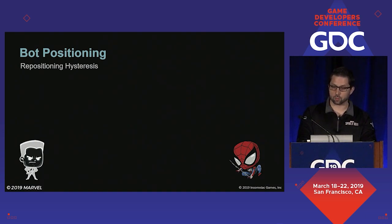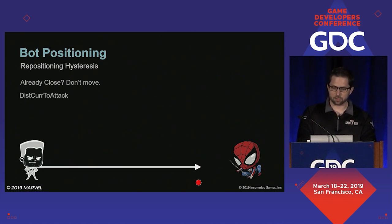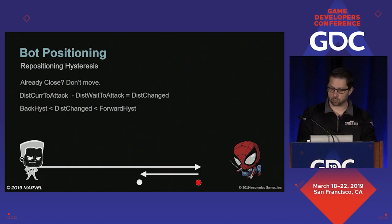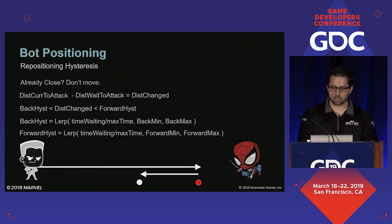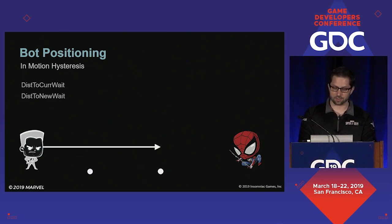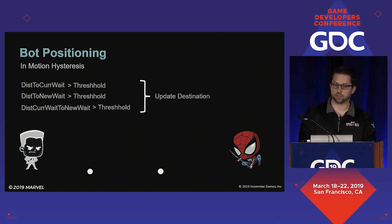In frantic combat, we still had issues with enemies repositioning when it felt unnatural. So we added a final check at the behavior level. First, we'd check that we aren't already too close to our new position. If that check succeeded, we'd compute the distance to our ideal attack position, then compute the distance between the new position and the attack position. Subtracting these values tells us how much repositioning will improve our current situation. Based on if we would be moving forward or backwards, we compare that value with different thresholds to determine if we should move. Those threshold values change over time so that a character who has been stationary for a long time is more likely to move.